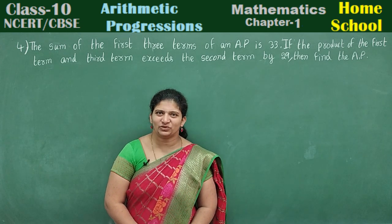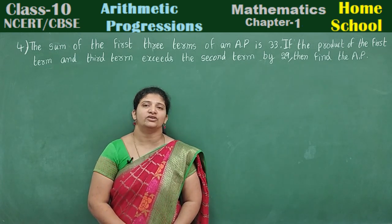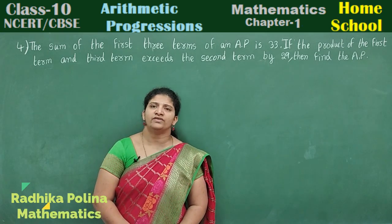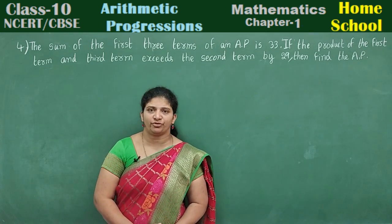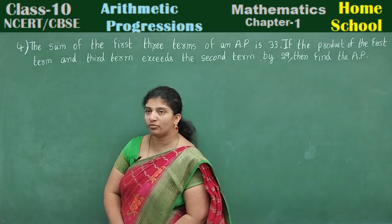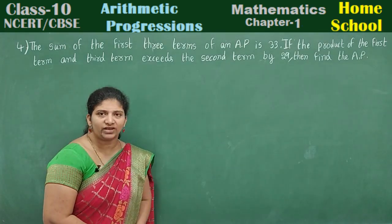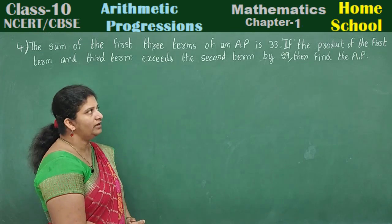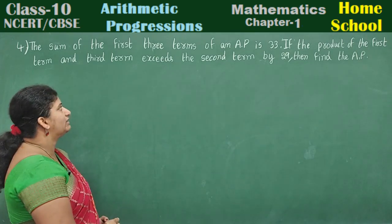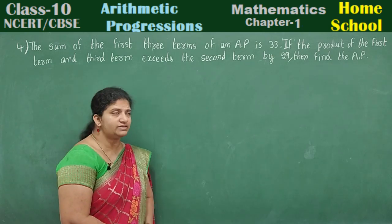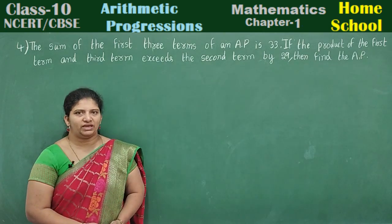Hi, hello, welcome to homeschool. This is your class 10 mathematics NCERT or CBSE board. We are in our first chapter, arithmetic progression application problems, and this is problem number 4. The sum of the first three terms of an AP is 33. If the product of the first term and third term exceeds the second term by 29, then find the AP.